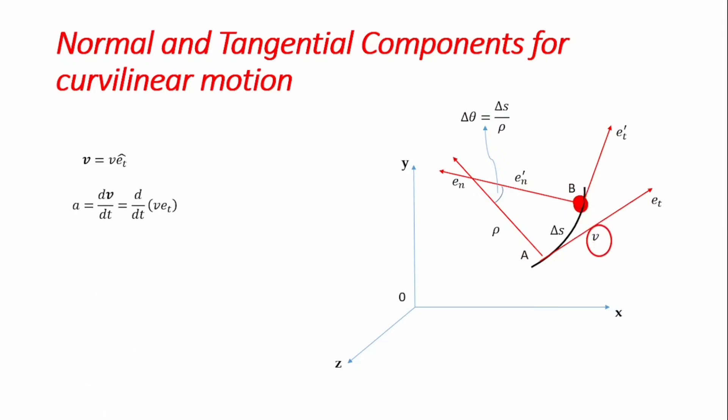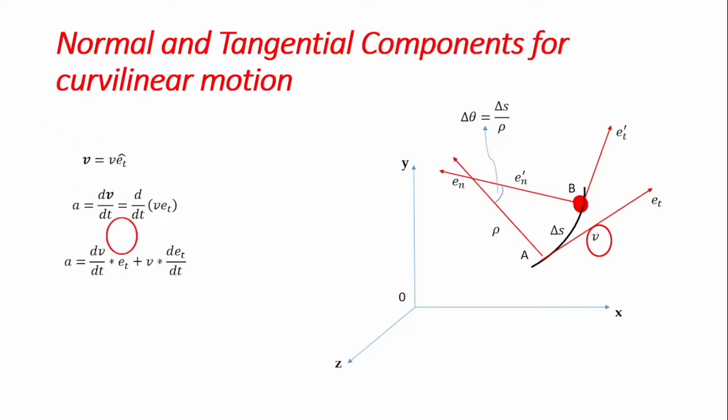The acceleration is dv/dt — the derivative of velocity with respect to time. Differentiating v·eₜ as a product we get: a = (dv/dt)·eₜ + v·(deₜ/dt).